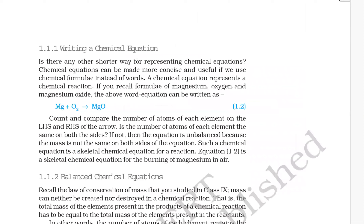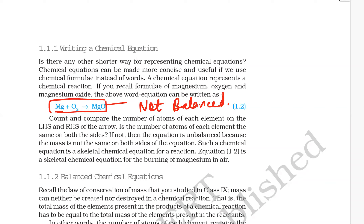When we write Mg + O2 → MgO, this type of equation which is not balanced is called a skeletal chemical equation.